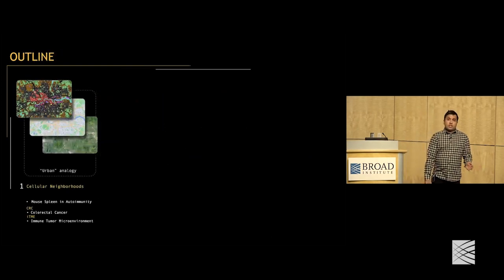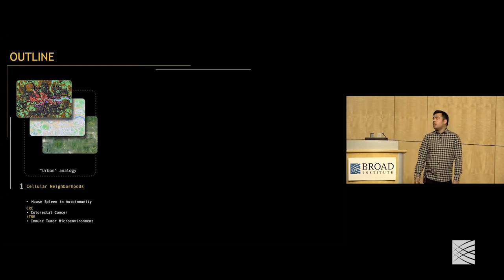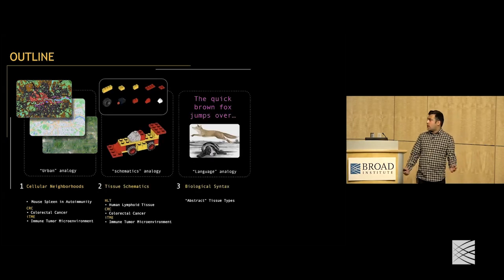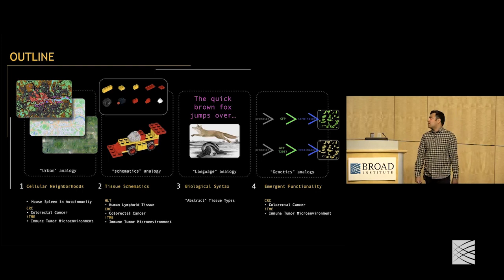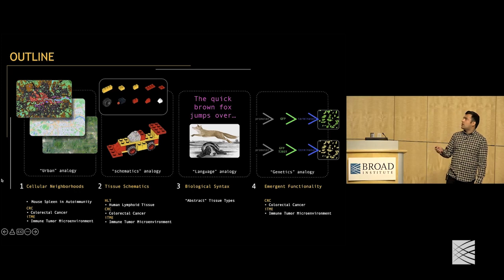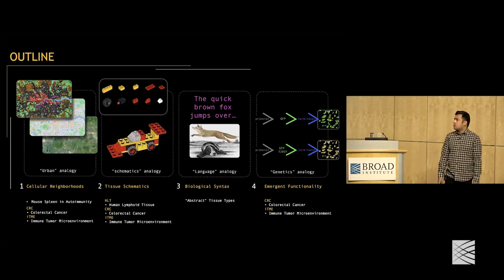This talk is structured in four parts, each informed by a different analogy and discussing different data sets. The first is cellular neighborhoods, the second is tissue schematics, the third is called biological syntax, and the fourth part is referred to as emergent functionality. Each of these four parts has a different analogy that informs it.